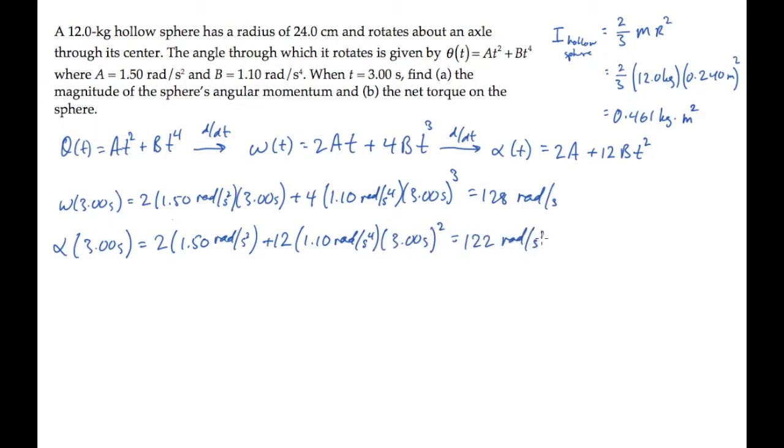Part A asks for the magnitude of the sphere's angular momentum. That's capital L, and it equals the moment of inertia I times the angular speed omega. Substitute those values and calculate, finding that it equals 59.0 kilogram meter squared per second.